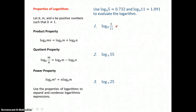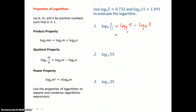We can write that log of a quotient as the difference of two logs — the log of the numerator take away the log of the denominator. So this is equal to log base 9 of 5, take away log base 9 of 11. And now I have values for those logs, so I can substitute them in. Log base 9 of 5 is approximately 0.732, and log base 9 of 11 is approximately 1.091.